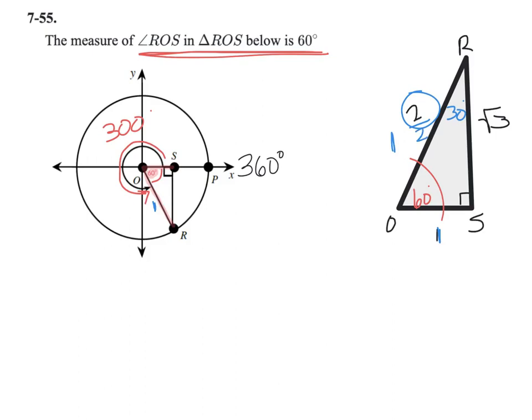2 divided by 2 is 1, but to keep this triangle proportional, if I divide the hypotenuse by 2, I have to divide everything by 2. That means this side is root 3 over 2, and this side is 1 half.